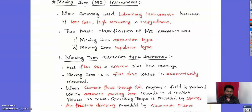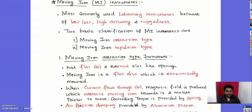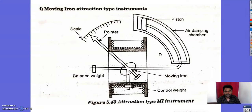The controlling torque is produced by a spring, similar to what we saw in the permanent magnet moving coil instrument. Air friction damping is provided by an aluminium piston connected to the instrument.